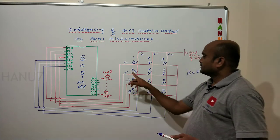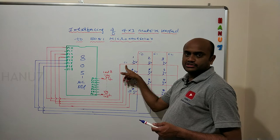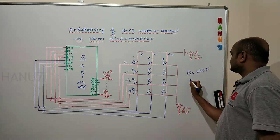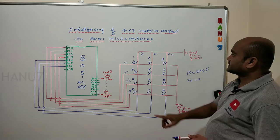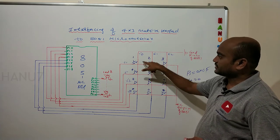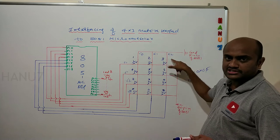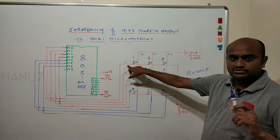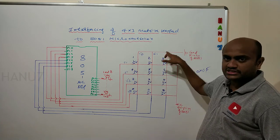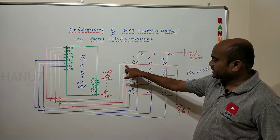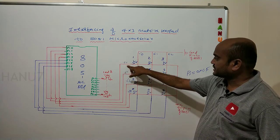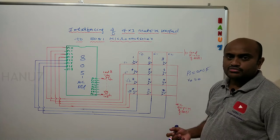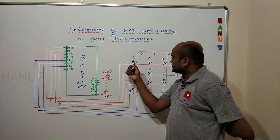Then what we have to do is make R0 equal to 0. We will write R0 = 0 and then scan for columns C0, C1, and C2 to see which column is pressed. This is called key scan. We make a particular row 0 and then scan for 3 columns. If R0 = 0, then I am checking whether this key is pressed, or this key is pressed, or this key is pressed.